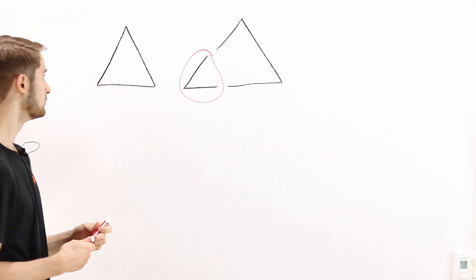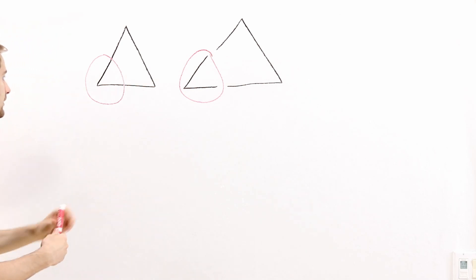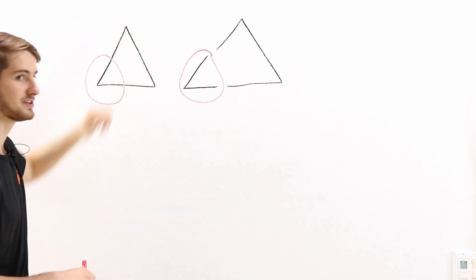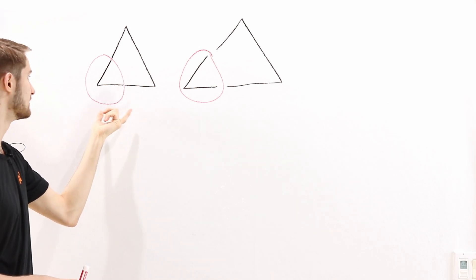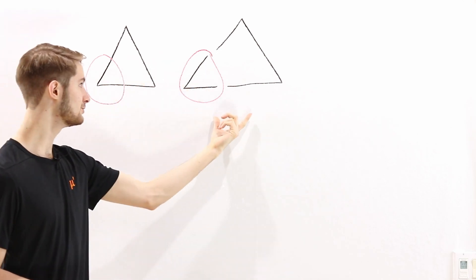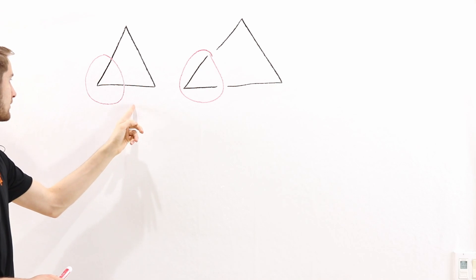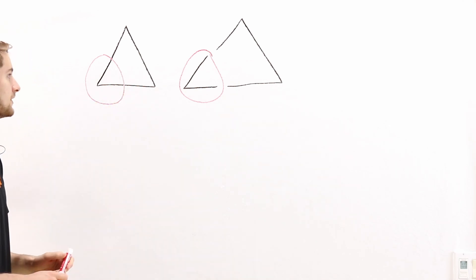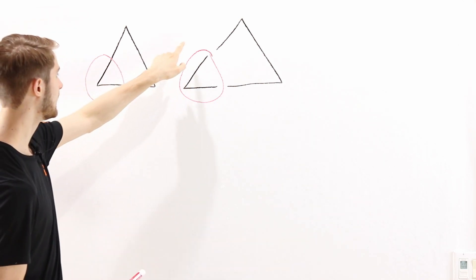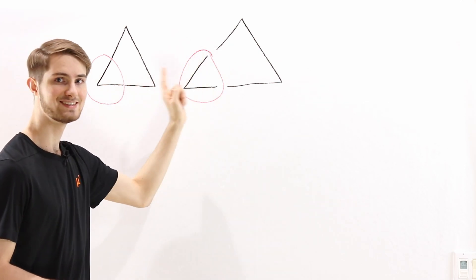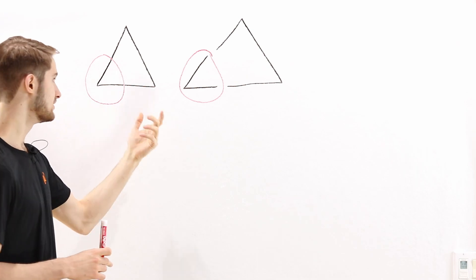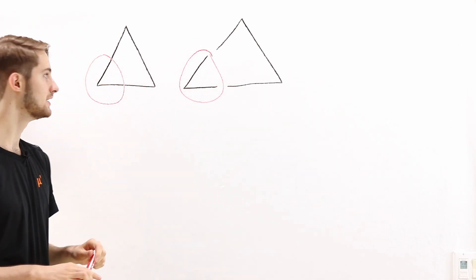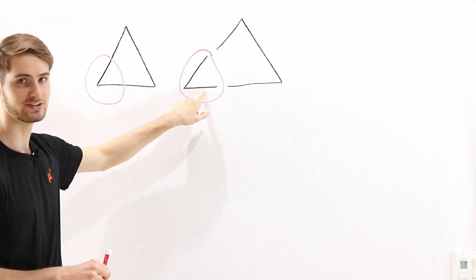We could also split the left triangle into two disjoint sets by drawing a circle, taking the inside as one set and the rest as another. But this differs from the right case: on the left triangle, the circle must intersect the triangle itself, whereas on the right, we can draw a circle that separates the two parts without intersecting the triangle at all.